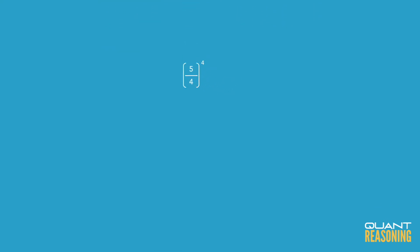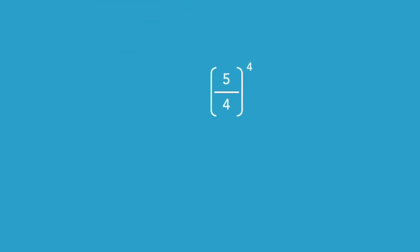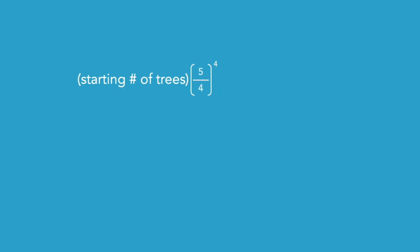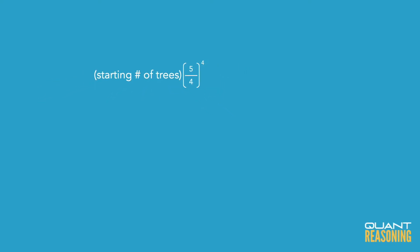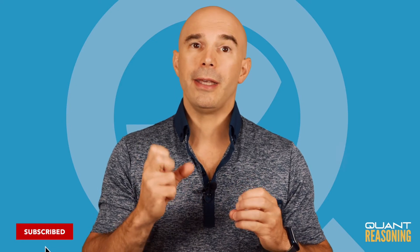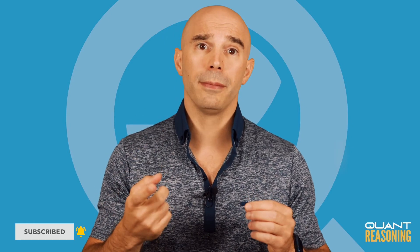So that's five-quarters to the power of four. The reason I'm using an exponent is because we are doing repetitive multiplication — we're multiplying by five-quarters over and over again, four times. So whatever the starting number of trees was, at the end it would be that starting number multiplied by five-quarters to the power of four.